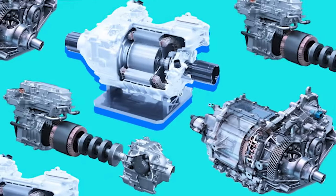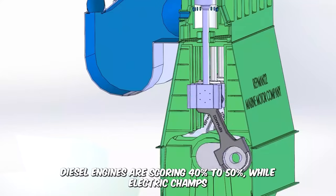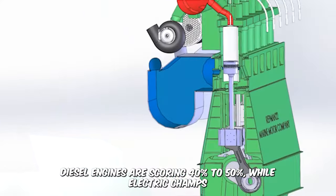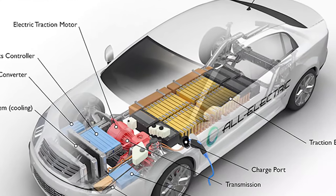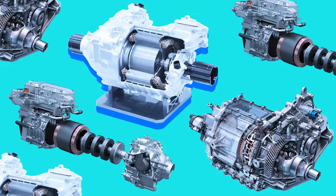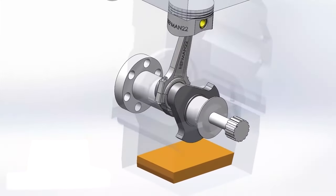Facing off against electric motors, it's the underdog in the thermal efficiency game. Diesel engines are scoring 40-50%, while electric champs are breezing around 50-60%. It might be a smidge behind, but tossing in the price tag of batteries and the delicacy of electric motor components, Mazda's two-stroke might just be the next big thing.